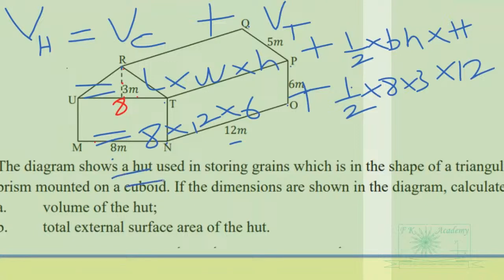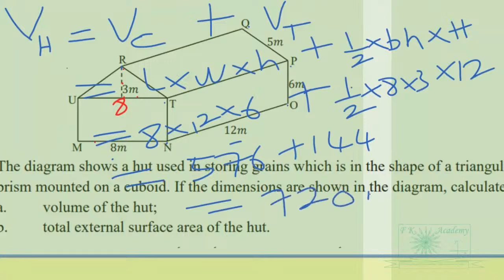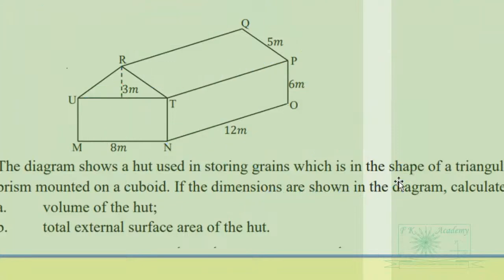When we simplify this, we get 576 plus 144, which gives us 720 cubic meters. So that is the volume of the heart: 720 cubic meters. Now let's find the total external surface area of the heart.